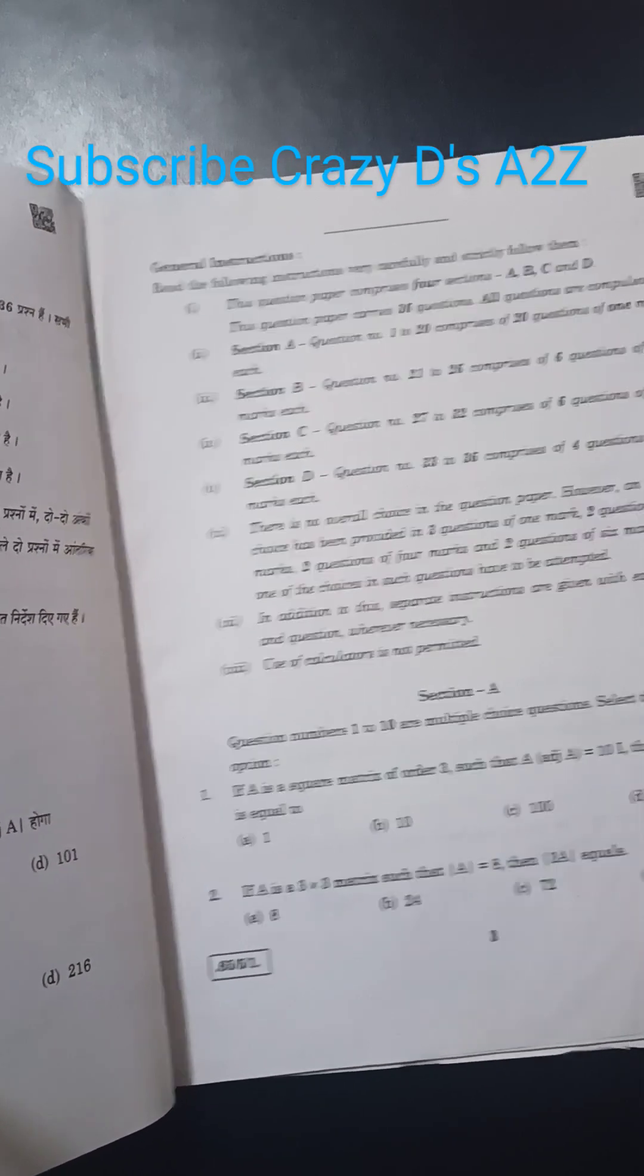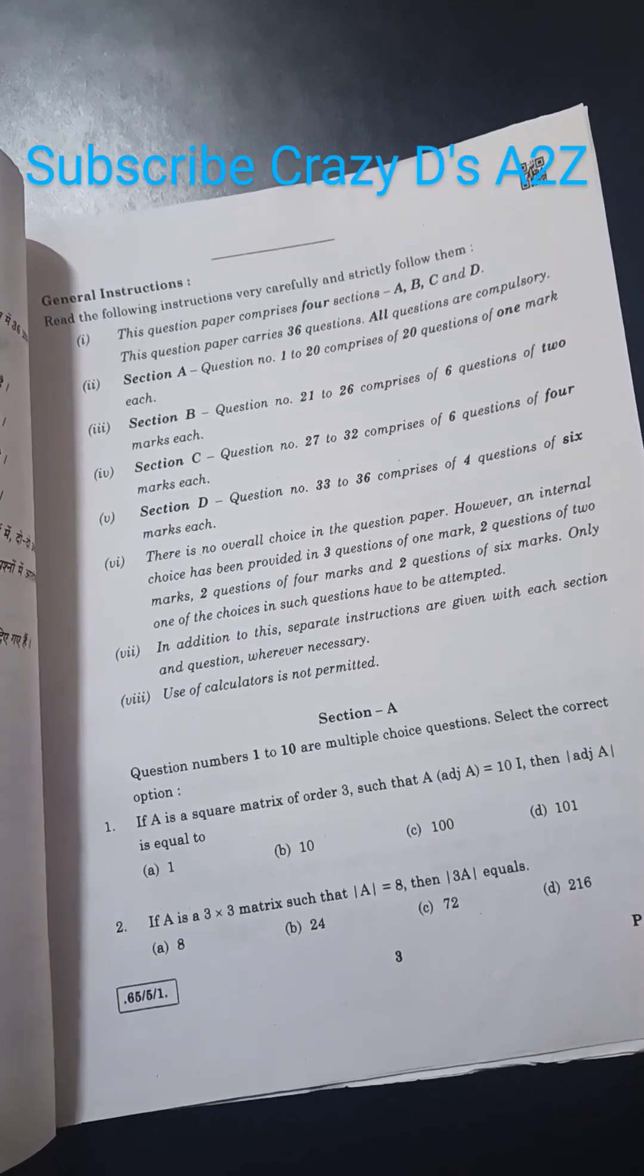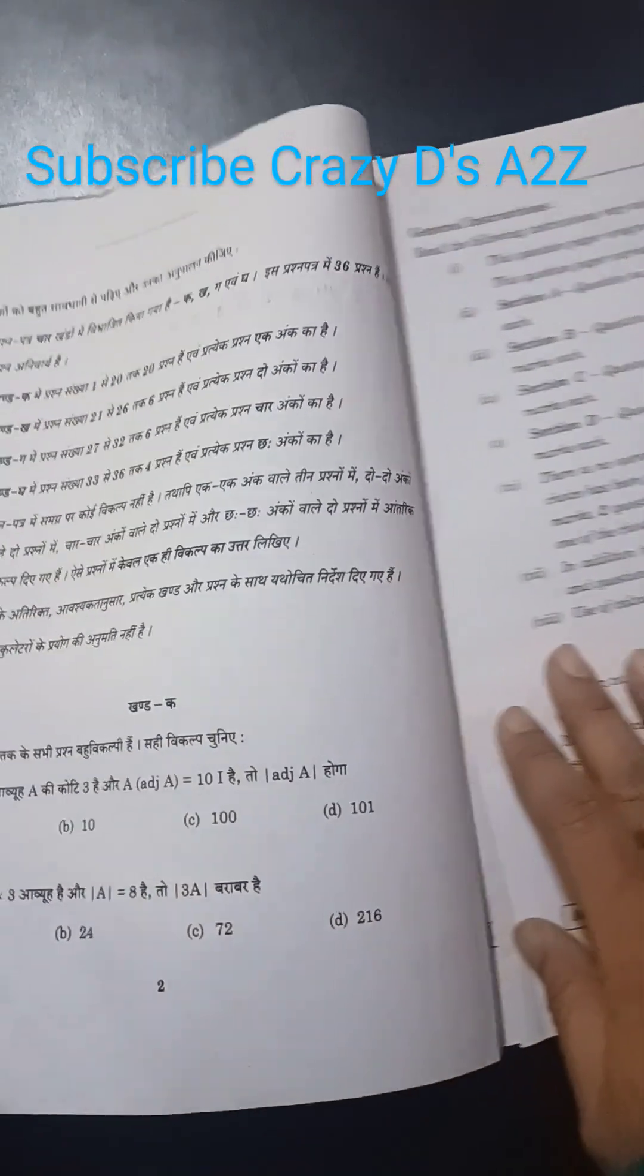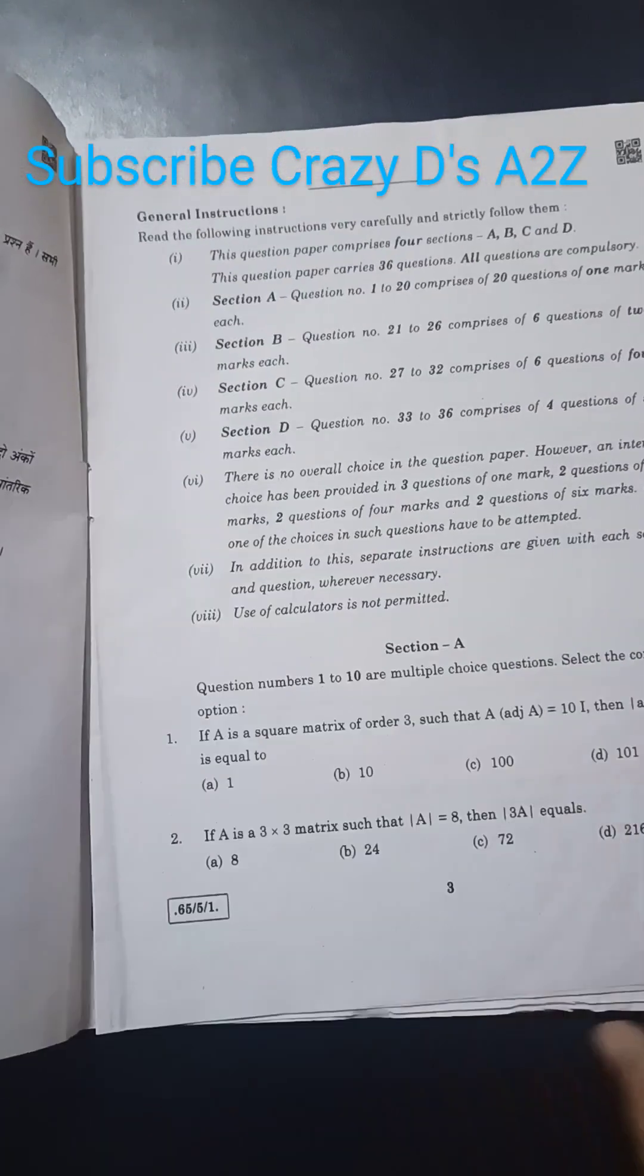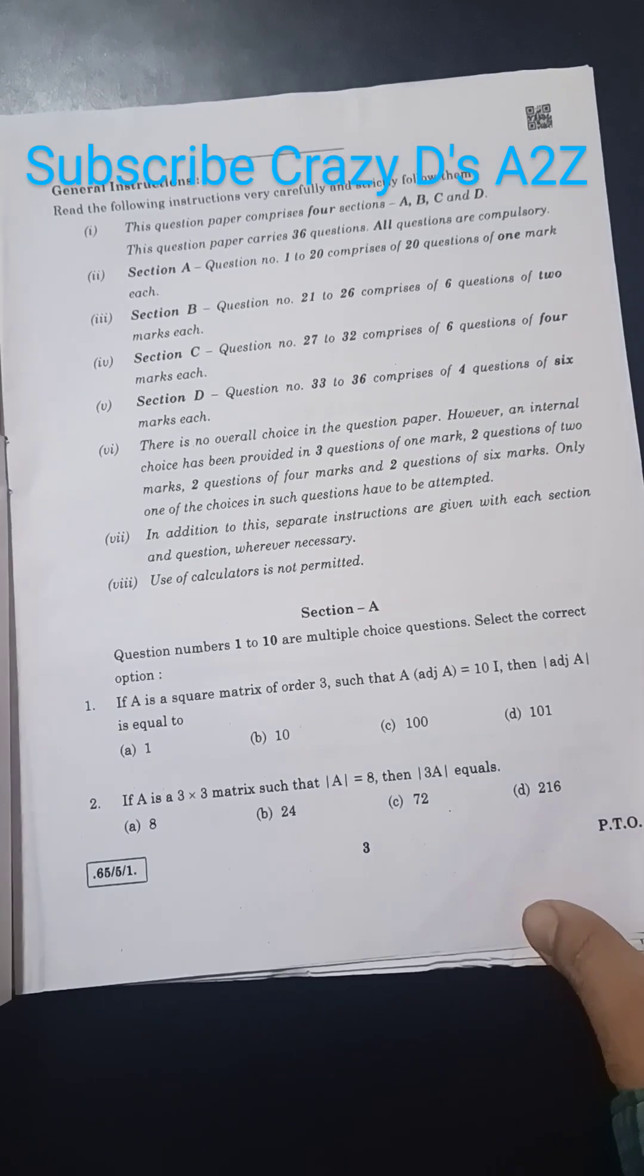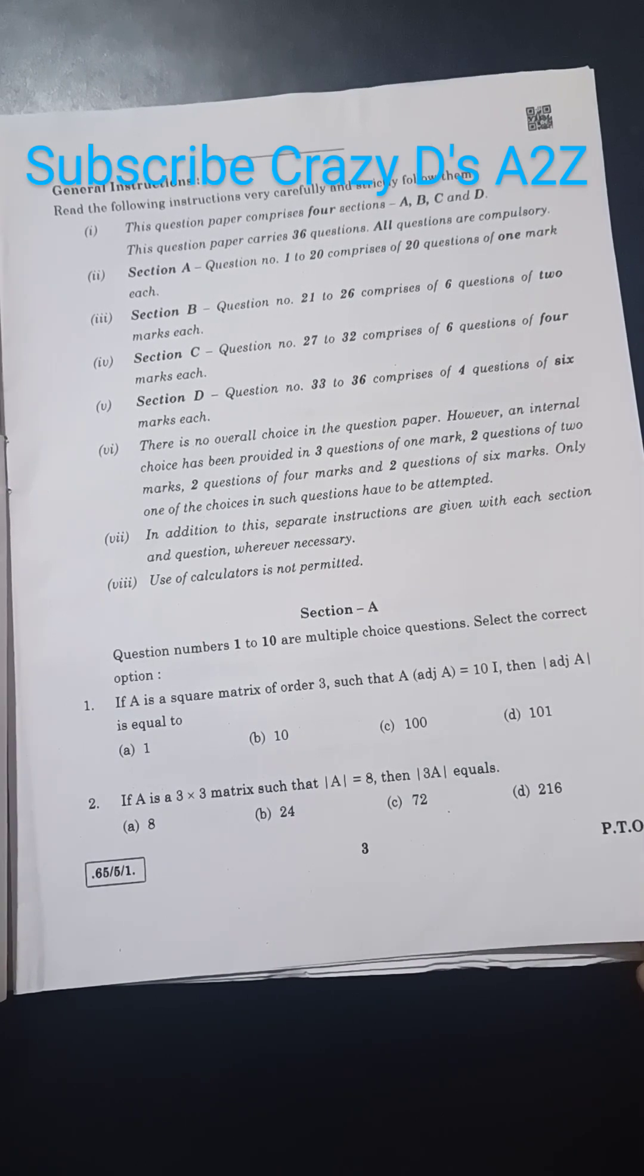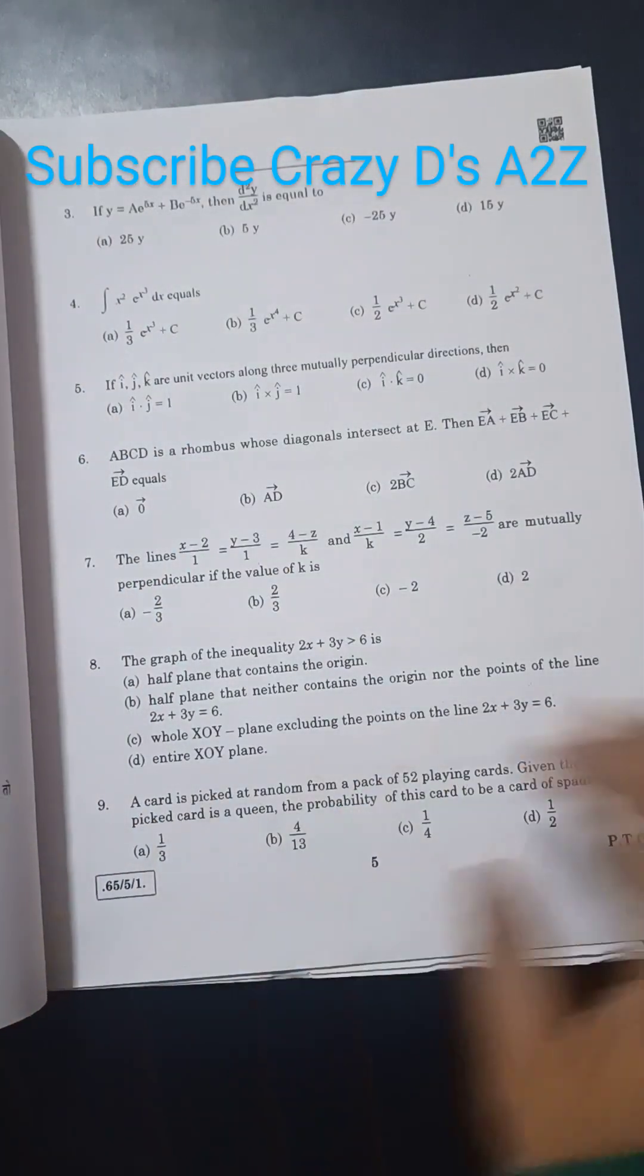As usual, this question paper comprises of two languages: one is the English part and another is the Hindi part. Instructions are provided in both languages. In Section A there are one to twenty questions which are of one mark each. In Section B there are six questions, in C again there are six, and in D there are four. So I'm just showing you the question paper.